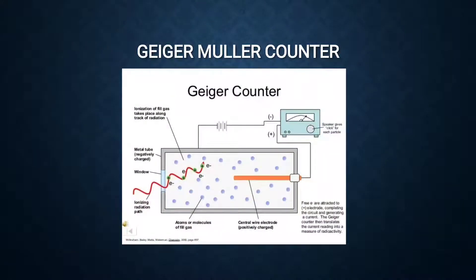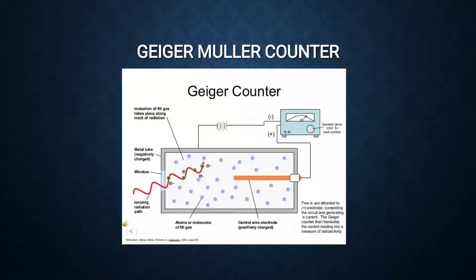Today we are going to discuss more about the Geiger-Müller counter method and the scintillation counter method. The Geiger-Müller counter has different types, for example thin-walled glass counter, GM counter for liquids, and GM counter for gases.